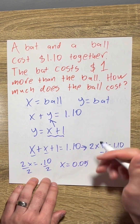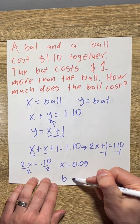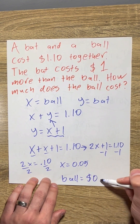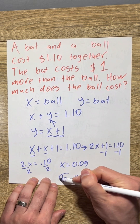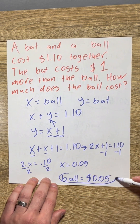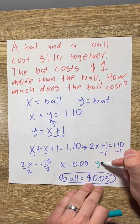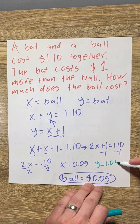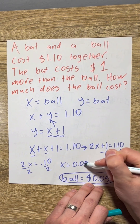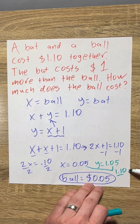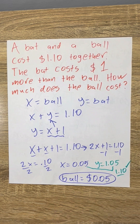And x is our ball, so our ball is equal to $0.05. We can always check our work too: if the ball is $0.05, then the bat, our y variable, is going to be $1.05. And together, $0.05 and $1.05 make $1.10. So our work checks out.